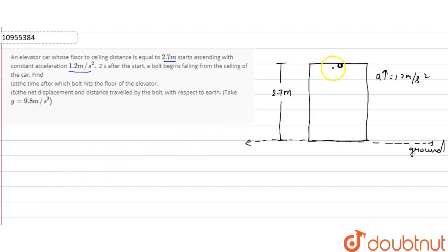I will show you a diagram. This is our elevator lift. I have shown you a bolt here. The distance from ceiling to the floor is 2.7m. This lift is going with 1.2m per second square acceleration. So, this lift will reach...